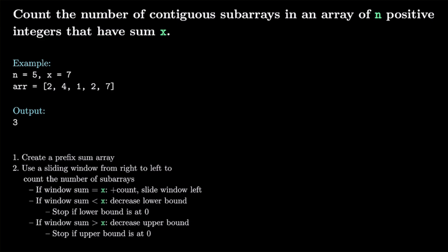If the window sum is less than x, that means we have too few numbers in our window, so we need to extend it by decreasing the lower bound. If the lower bound is already 0, we stop. If the window sum is greater than x, we have too many elements, so we decrease the upper bound to reduce the window. If the upper bound is 0, we stop there too.